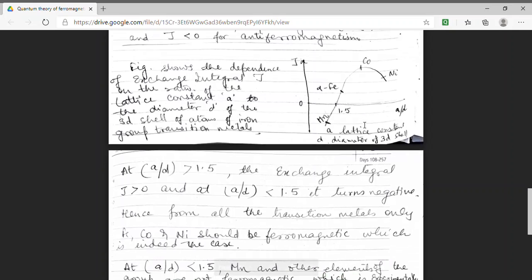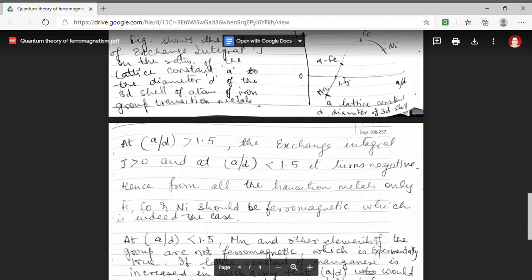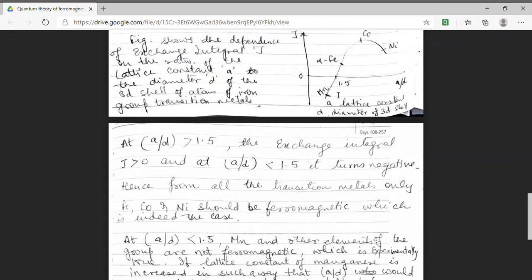Now, for A by D less than 1.5, we have J to be negative. That means these materials should not show ferromagnetic behavior. For example, here I have shown Manganese. For Mn, A by D is less than 1.5. Hence, Manganese should not show ferromagnetism, which is experimentally true behavior also.